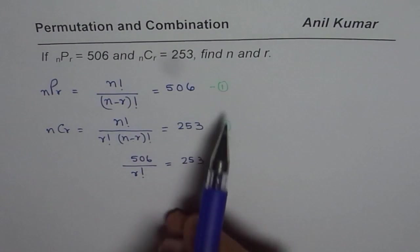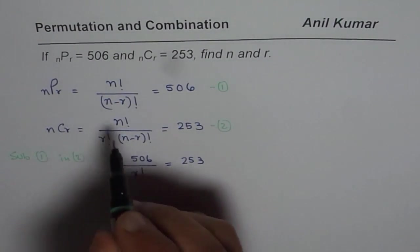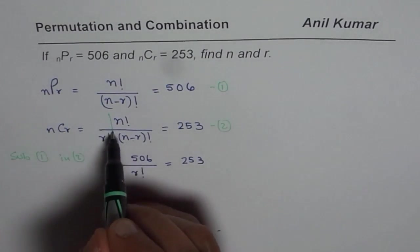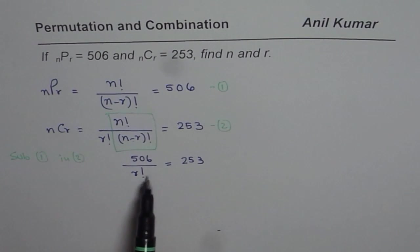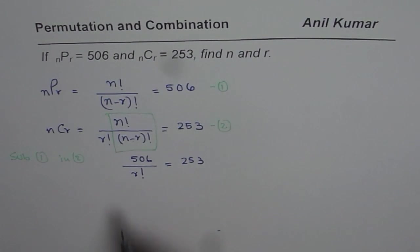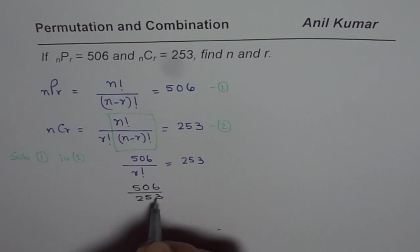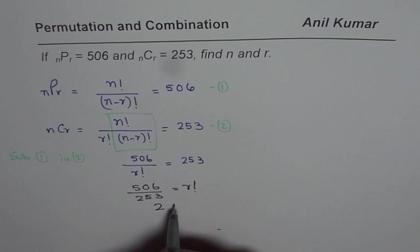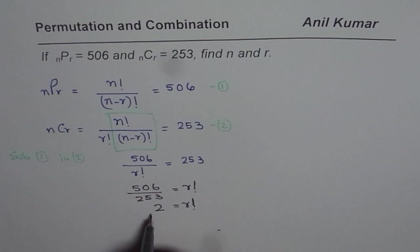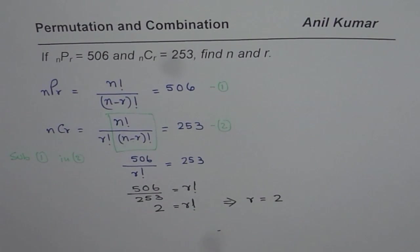Do you see that? So I substituted equations 1 and 2. We substitute the value of 506 for that part, and we get 506 divided by R factorial equals to 253. Now we can solve and find the value of R. If you cross multiply, you get 506 divided by 253 equals 2. So 2 is R factorial, and if 2 is R factorial, this implies that R equals 2. So that is the answer for R.